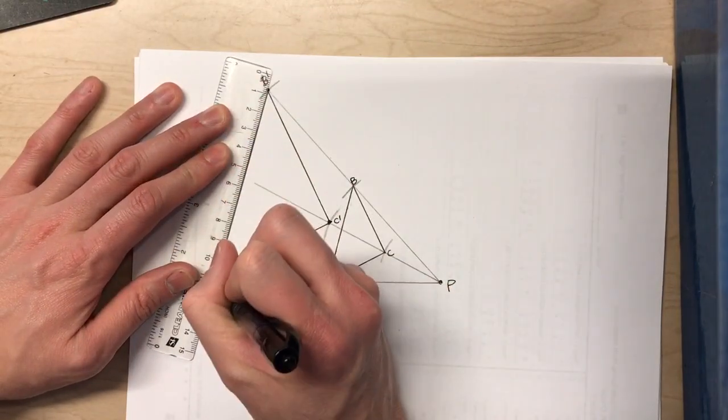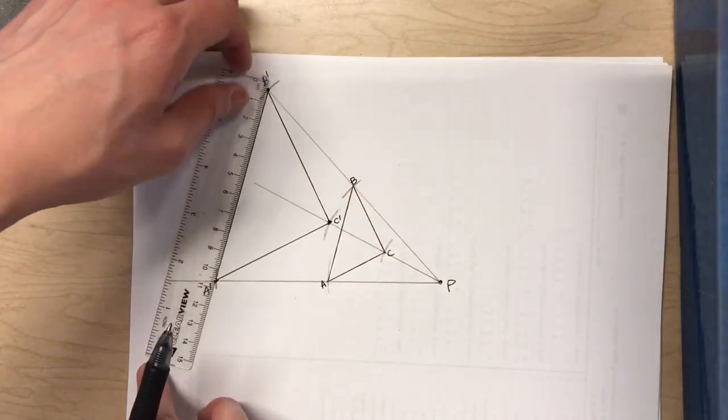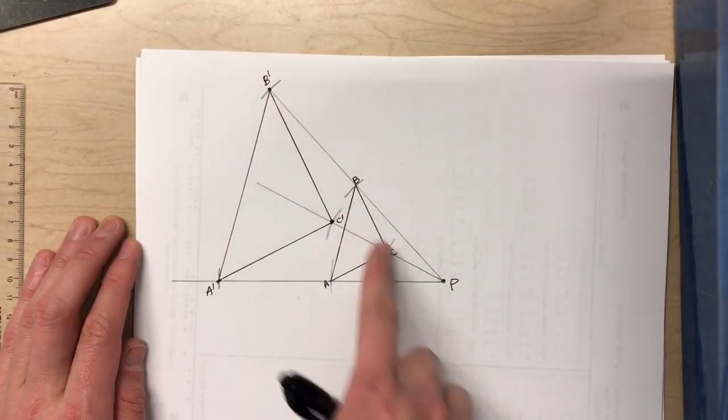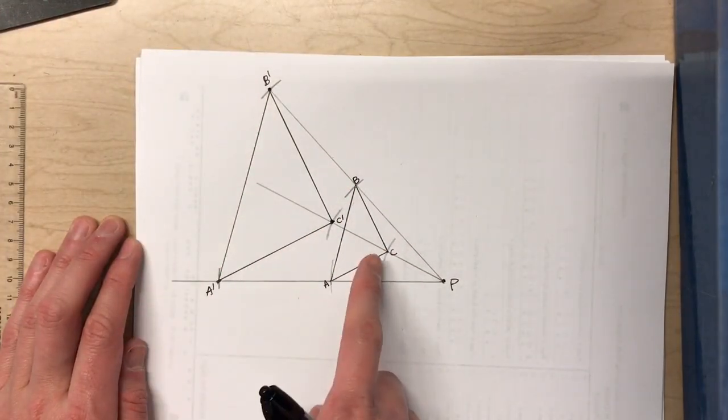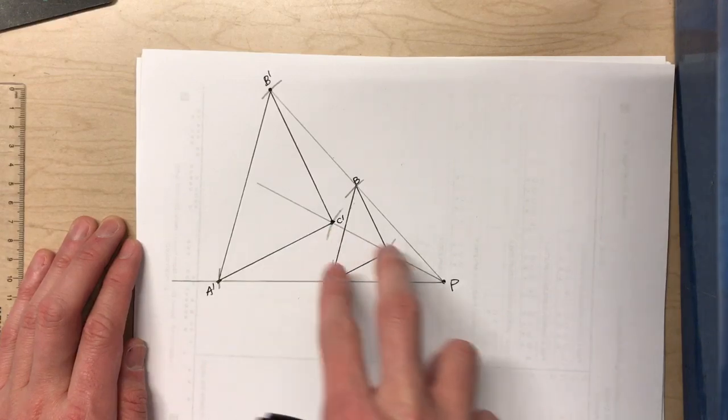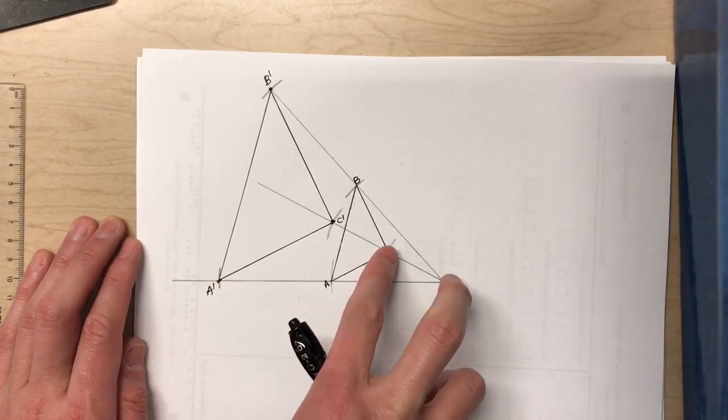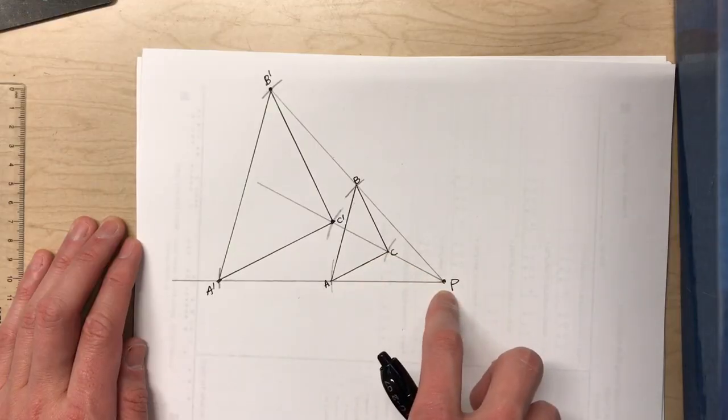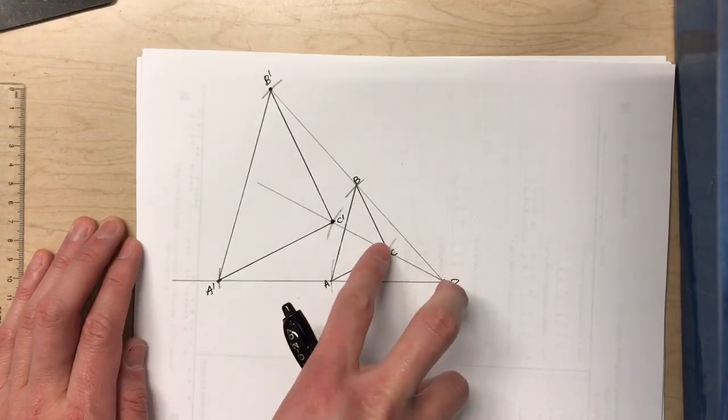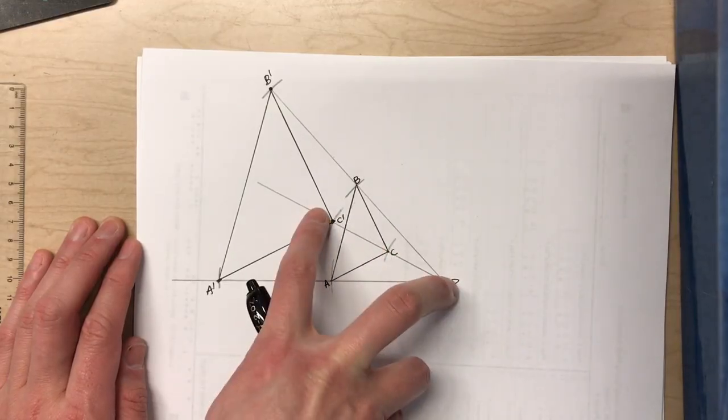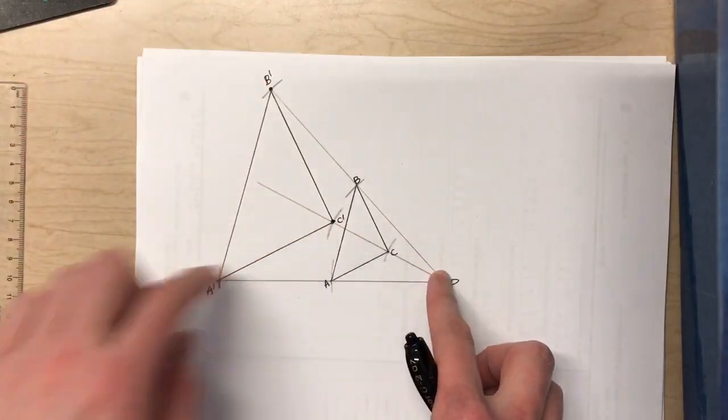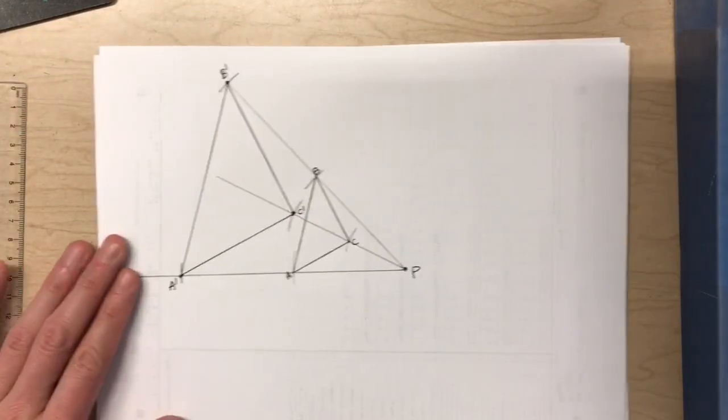So after I connect all the dots, you'll notice that with a scale factor of 2 it makes the exact same shape as the original, but each of the side lengths is twice as big. Also, the distance of each point from point P has doubled. So now from this to this it's twice as far away. Alright, so that would be a scale factor of 2.